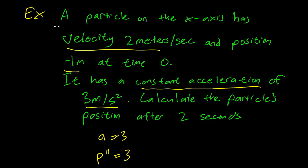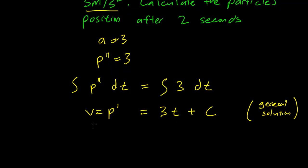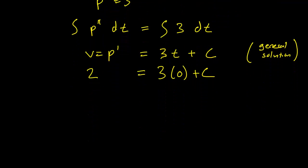So we care about the velocity at time 0. And we know that our v is going to be 2 at time 0, which gives us c equals 2. So our specific solution for the velocity is v equals 3t plus 2.